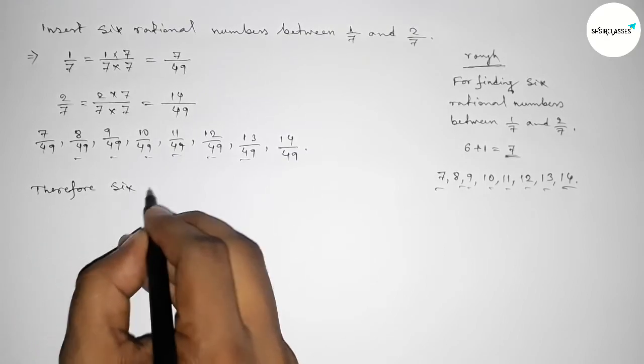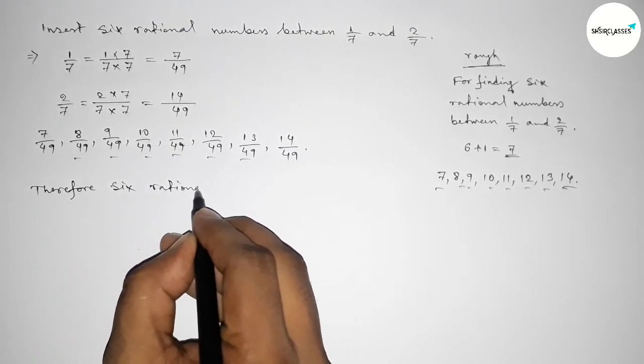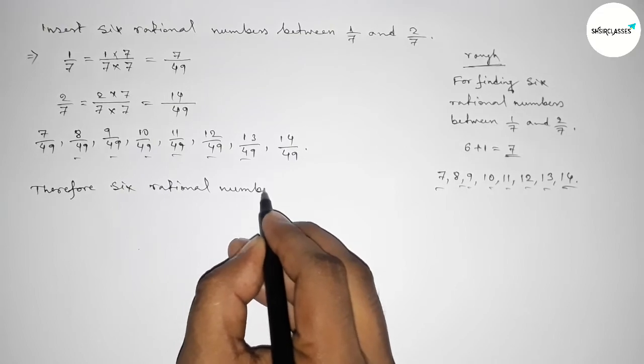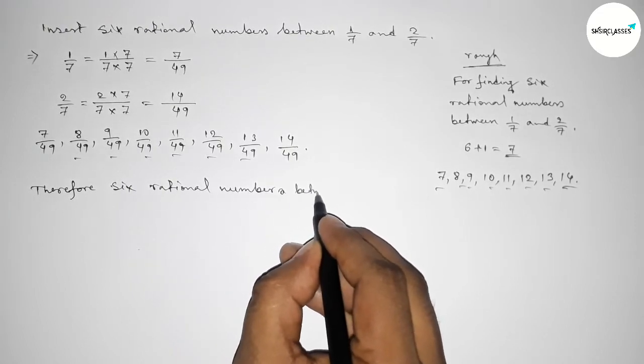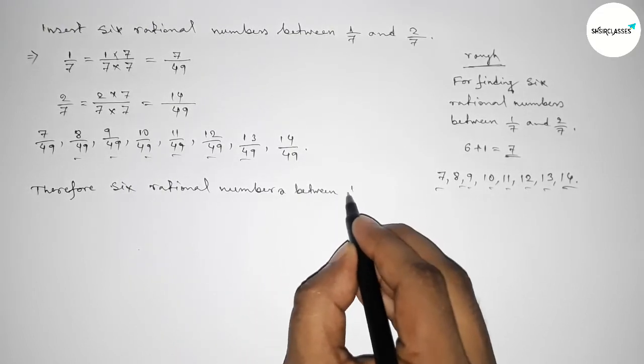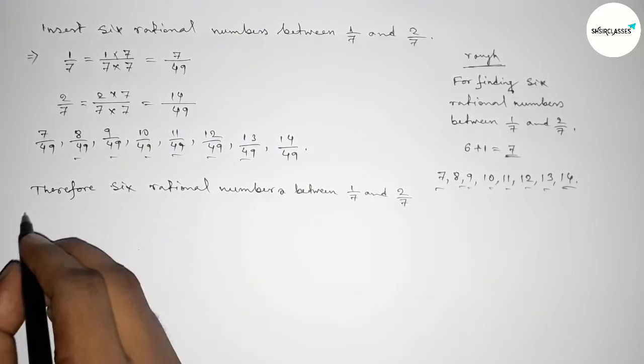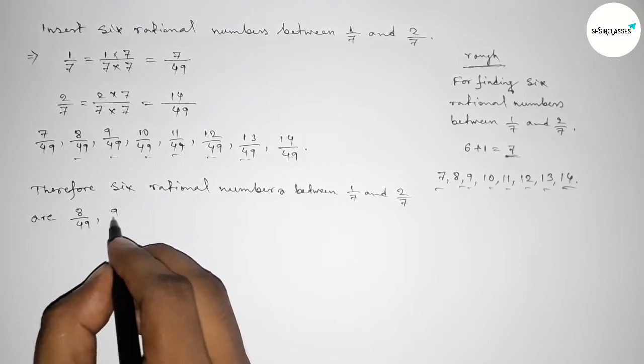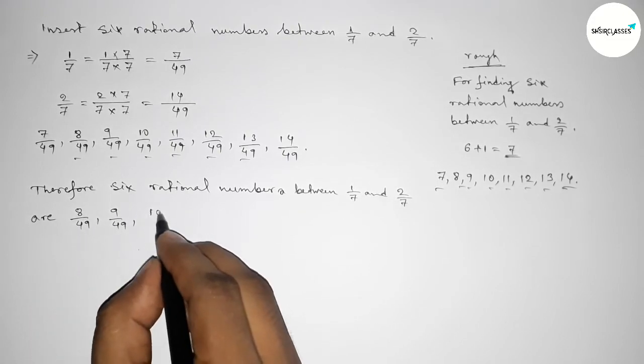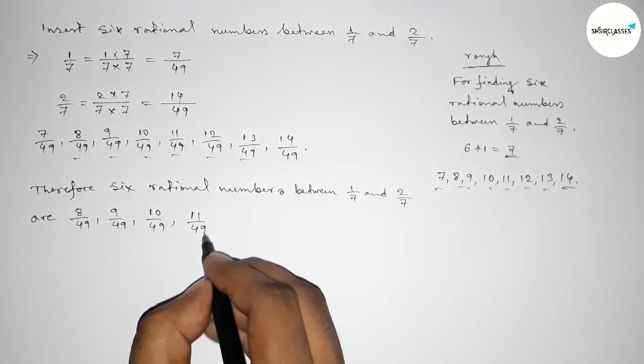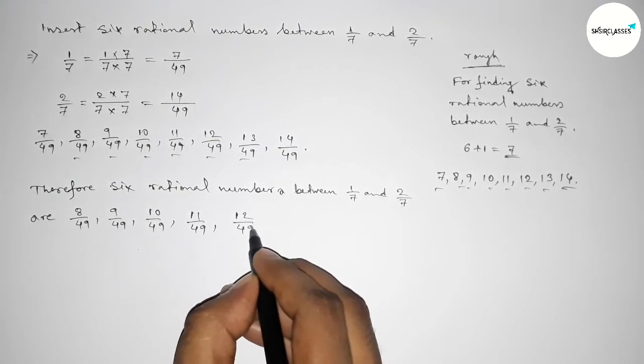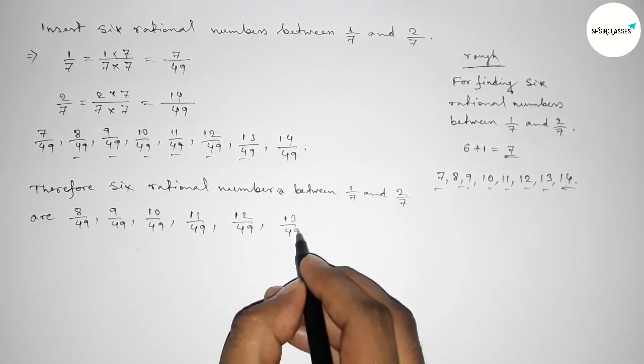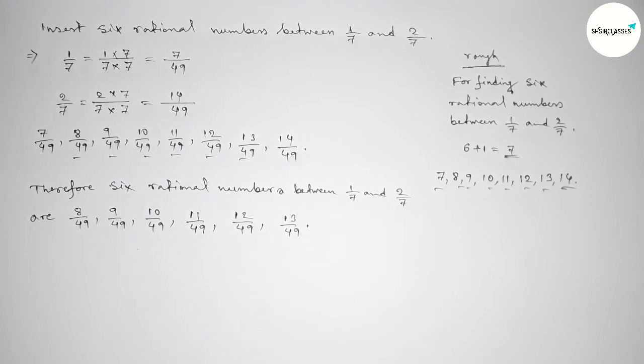Therefore, six rational numbers between 1/7 and 2/7 are: first one will be 8/49, then 9/49, then 10/49, 11/49, 12/49, then last 13/49. So that's all, thanks for watching. If this video is helpful to you, then please share it.